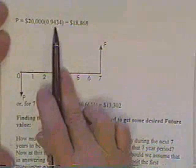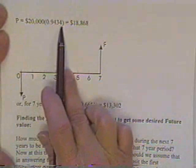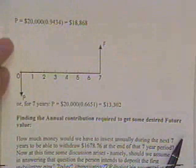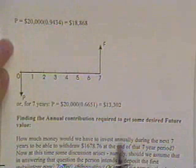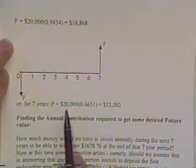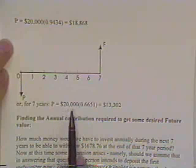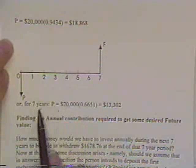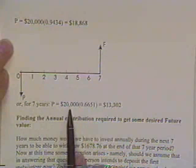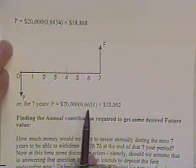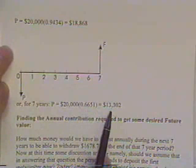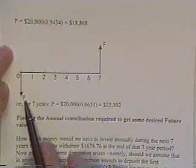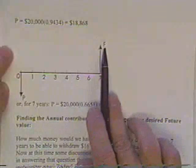The factor out of the table is 0.9434. Twenty thousand dollars times that gives you eighteen thousand eight hundred sixty-eight dollars you'll have to invest now. Same way, if you have seven years between now and when you need twenty thousand dollars to buy the car, you can go to the table and look on the seven year row, multiply your twenty thousand dollars times the appropriate factor. You get thirteen thousand three hundred two dollars that needs to be invested presently in order to turn it into a future value needed.